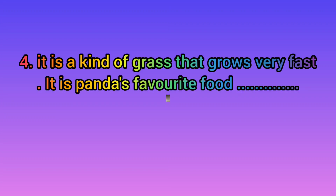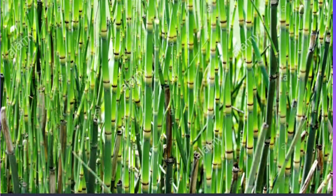Let us go to the fourth one. It is a kind of grass that grows very fast and is the panda's favorite food. Which plant is it, children? It is bamboo. Bamboo is a type of fast-growing plant used in place of wood for a variety of applications, including making furniture, flutes, and even vehicle frames.